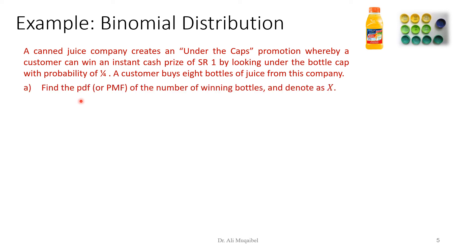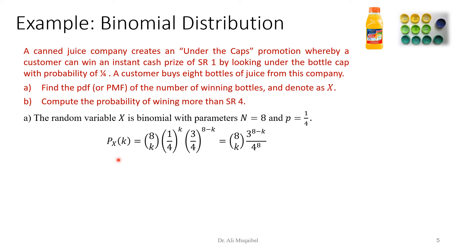So, let's look at how we formulate the problem. It says find the PDF. When it's discrete, we call it PMF, probability mass function. It's not density anymore, it's a mass function, of the number of winning bottles and denote as x. And then it says compute the probability of winning more than four reals. So, we have capital N, which is eight, and we have small p, which is one-fourth.